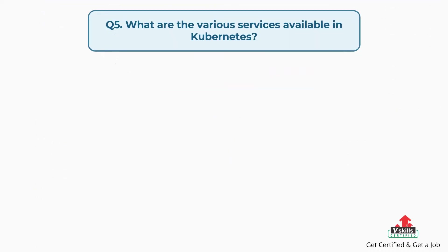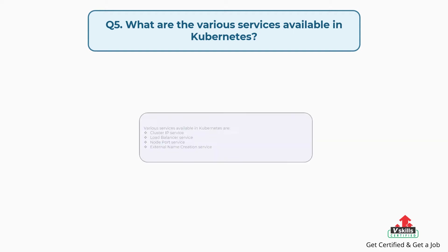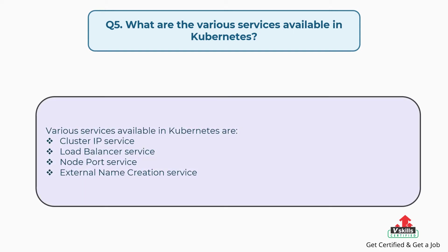Question number five: What are the various services available in Kubernetes? The various services available in Kubernetes are: Cluster IP service, Load Balancer service, Node Port service, and External Name Creation service.